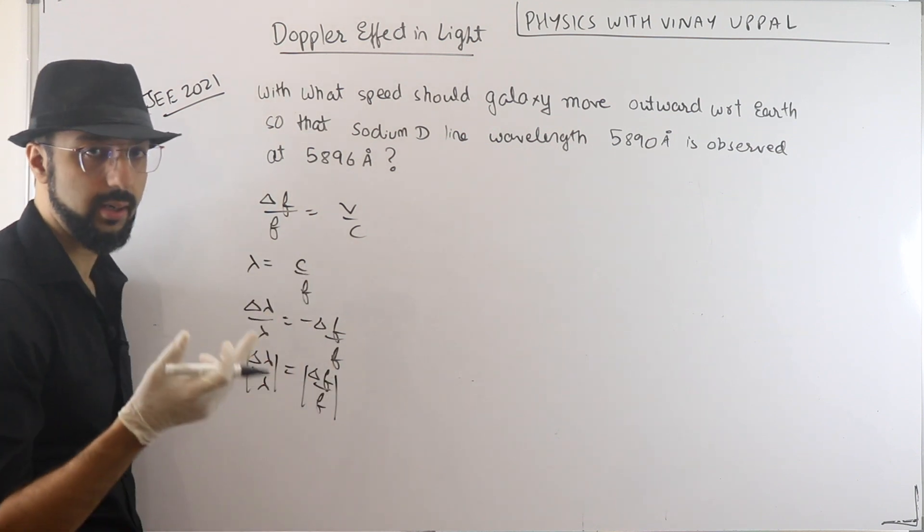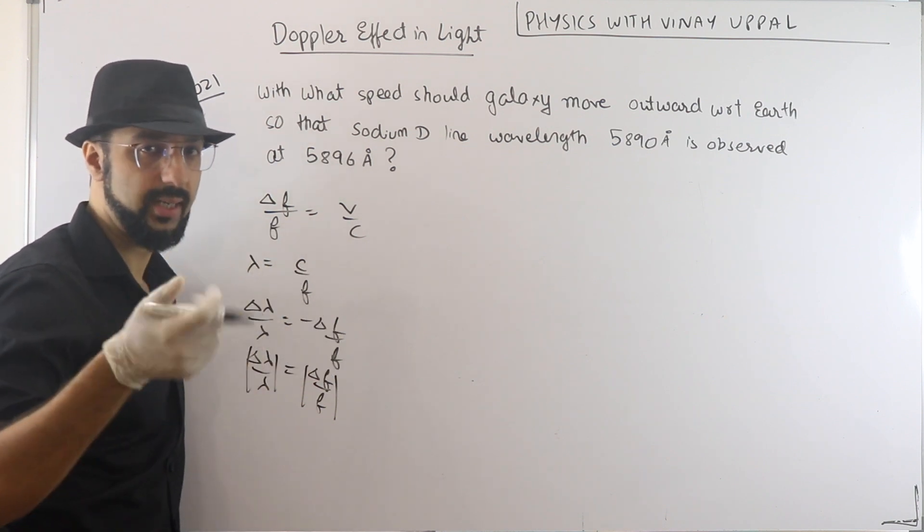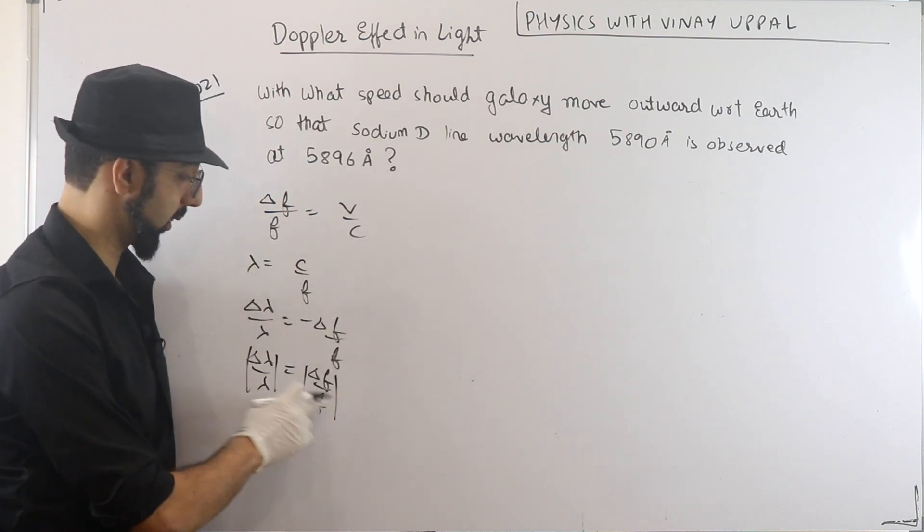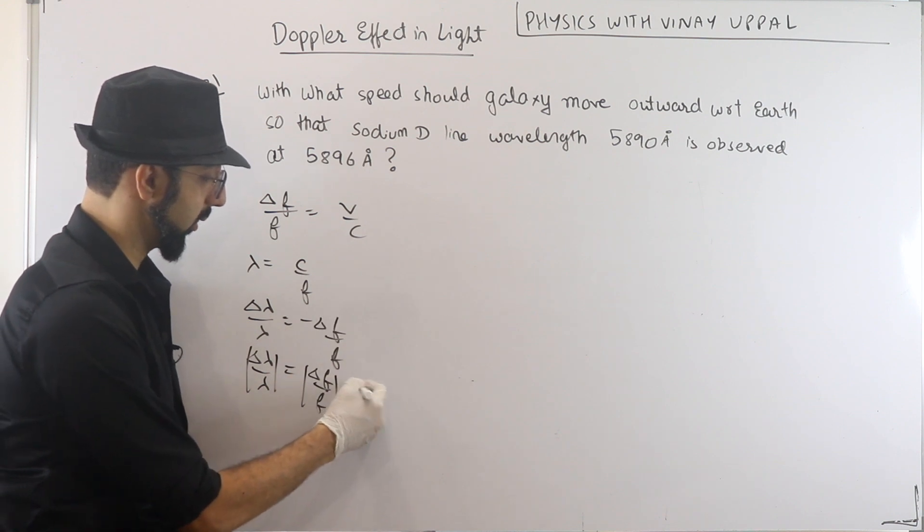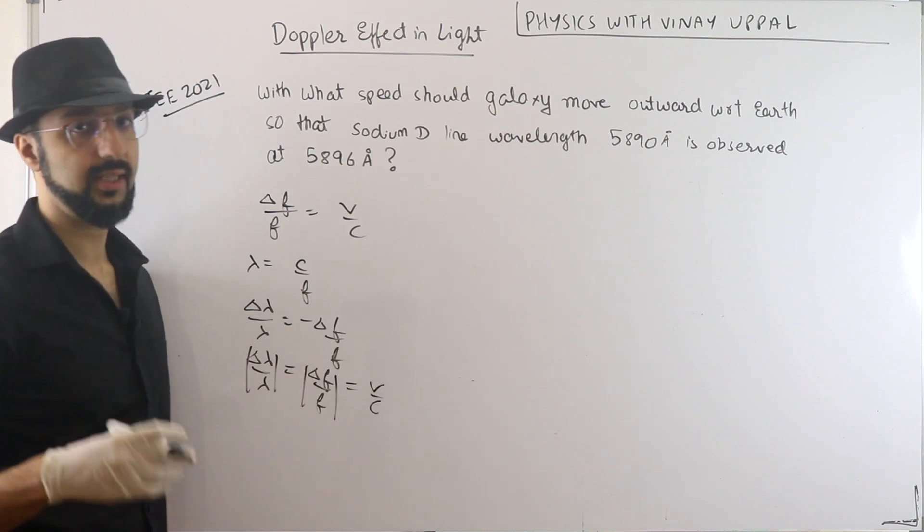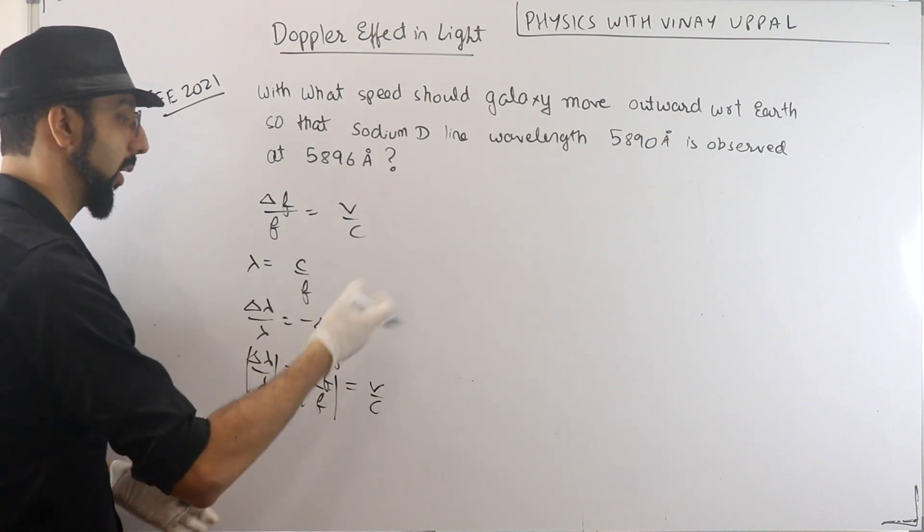So delta F by F is delta lambda by lambda. Delta F by F is dF by F and d lambda by lambda. So these are the magnitude equal here. And this will both be equal to V by C. But V is the relative velocity between the source and the observer. Okay, now you try it out. Then take a look at the solution.